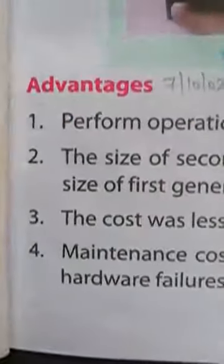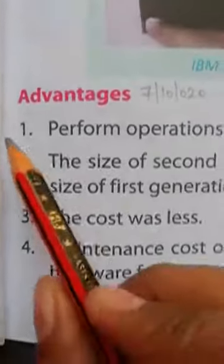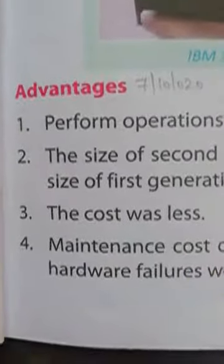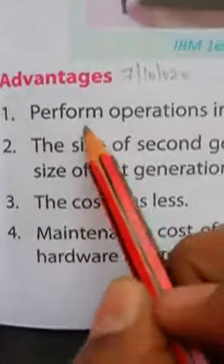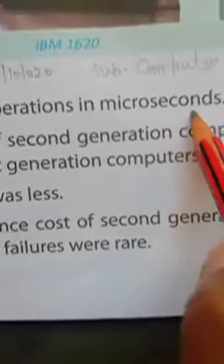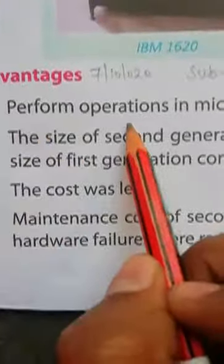Advantages means labia, gun, second generation. First, perform operations in microseconds. Microseconds means microseconds, means perform operations.